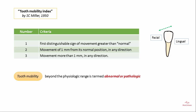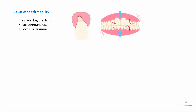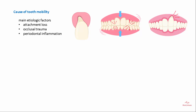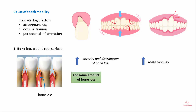There are different causes of tooth mobility, grouped into main etiological factors: attachment loss, occlusal trauma, and periodontal inflammation. Bone loss around the root surface is a key factor — increased severity and distribution of bone loss can lead to increased tooth mobility. For the same amount of bone loss, short tapered roots will have more movement compared to normal-sized roots.